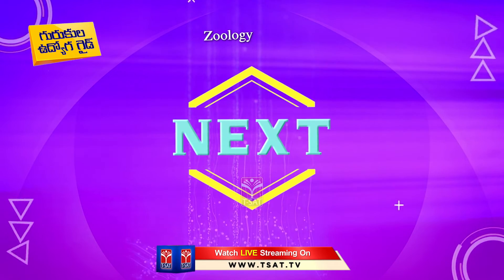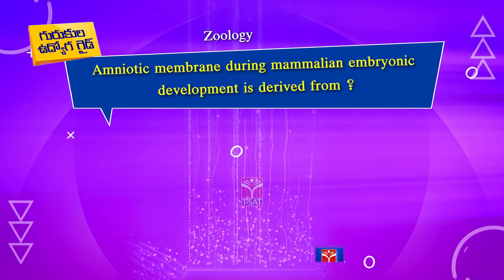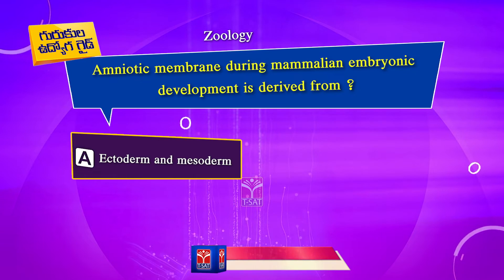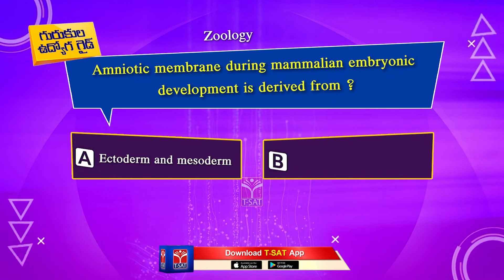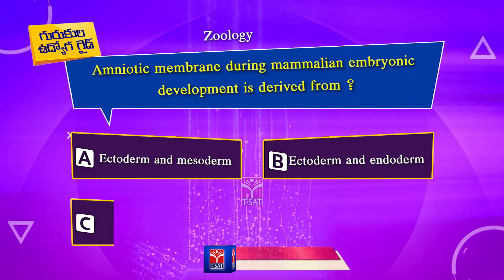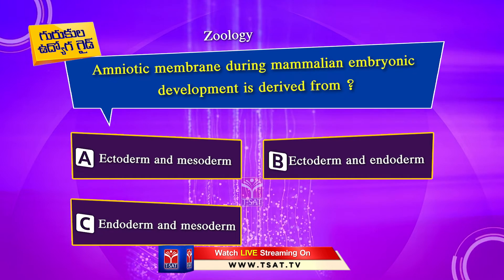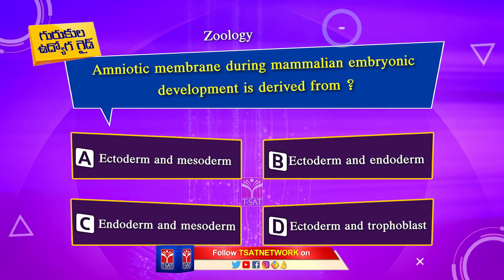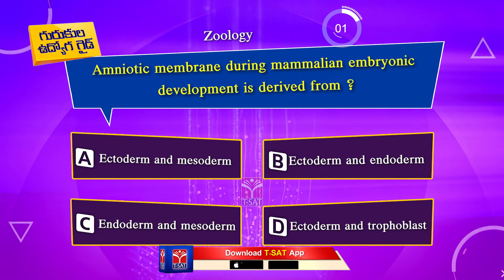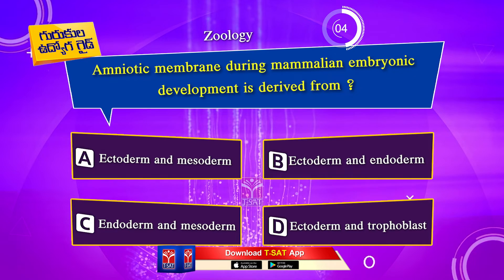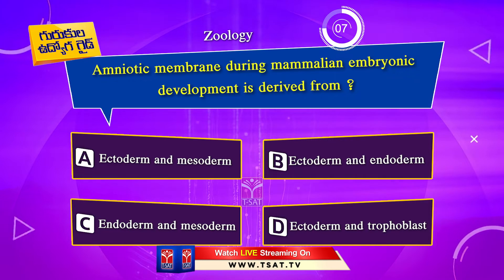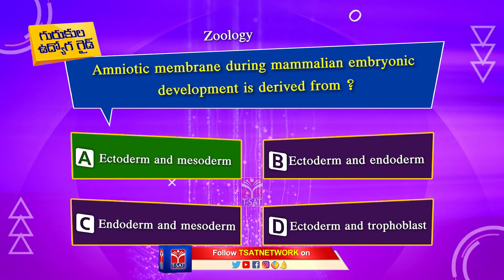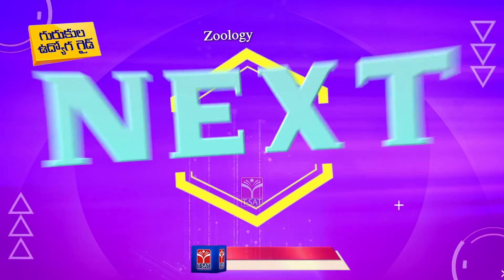Next question. Amniotic membrane during mammalian embryonic development is derived from: Option A. Ectoderm and mesoderm. Option B. Ectoderm and endoderm. Option C. Endoderm and mesoderm. Option D. Ectoderm and trophoblast. The correct answer is Option A. Ectoderm and mesoderm.